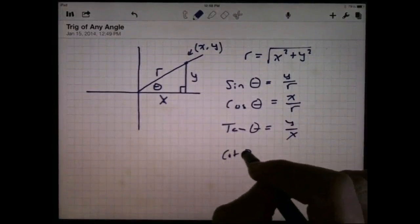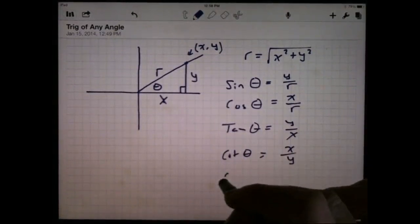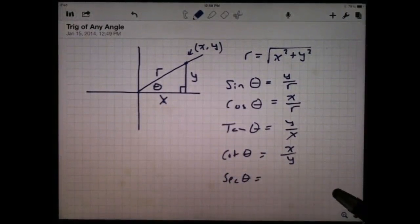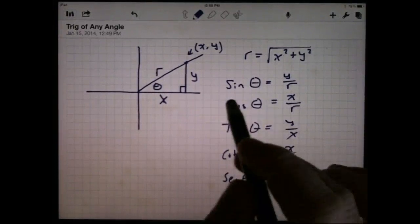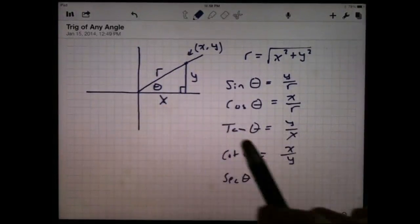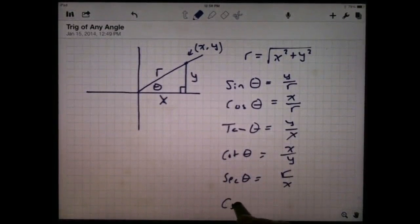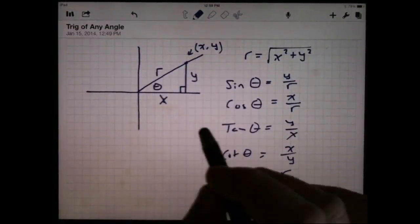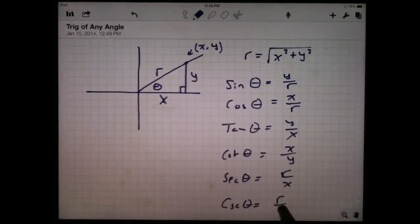The cotangent of theta is the reciprocal of that, so x divided by y. The secant of theta is reciprocal of the cosine, the hypotenuse divided by the adjacent side, so r divided by x. And lastly, the cosecant of theta is the hypotenuse divided by the opposite side, so that's r divided by y.